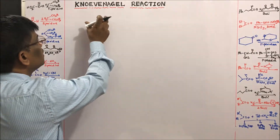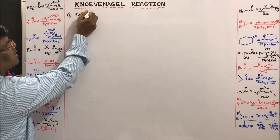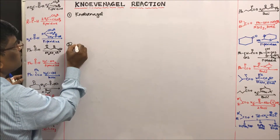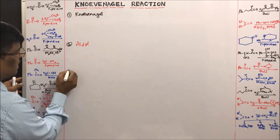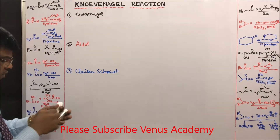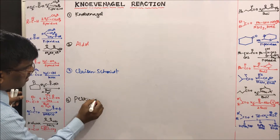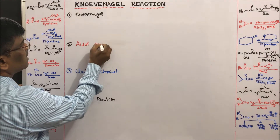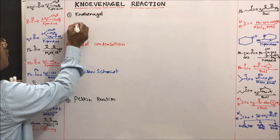There are four reactions that are very similar to the Knoevenagel reaction. The first one is the Knoevenagel reaction, the second is the Aldol reaction, the third is the Claisen-Schmidt reaction, and the fourth is the Perkin reaction. These four reactions are very similar. Let us take them one by one, starting with the Aldol condensation and then the Knoevenagel reaction.